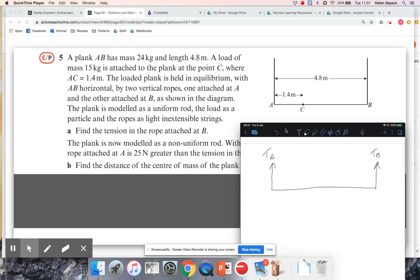Okay, we've got the mass that they've added at C, which was 15 kilograms, so it has a weight of 15g. And we're initially modeling it as a uniform rod, so the actual mass of the rod, which is 24 kilograms, which weight is 24g, is going to be through the center.